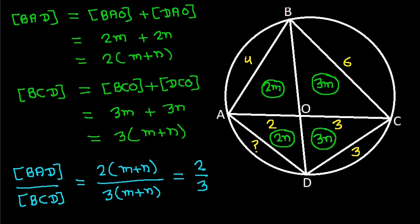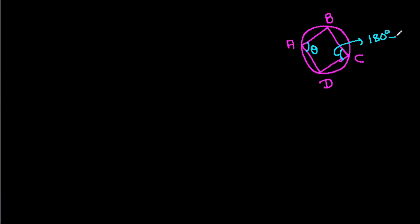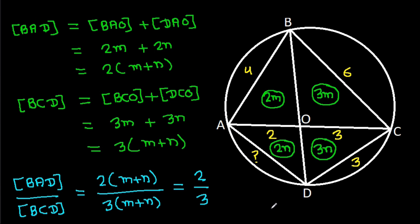In any cyclic quadrilateral ABCD, if one angle is theta, then the opposite angle is 180 degrees minus theta. Since ABCD is cyclic, if this angle is theta, then the opposite angle is 180 degrees minus theta.